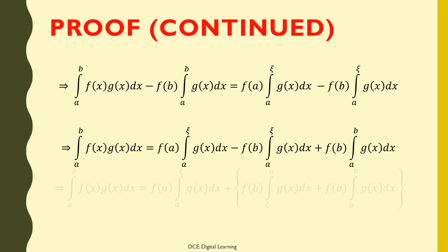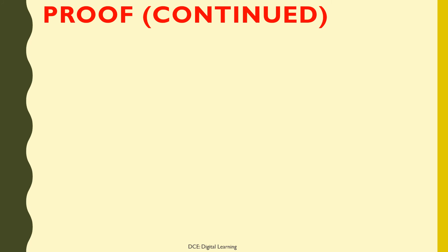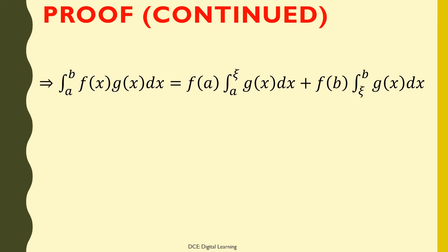On regrouping the terms, this implies the integral of f(x)·g(x) dx from a to b equals f(a) times the integral of g(x) dx from a to ξ, plus f(b) times the integral of g(x) dx from ξ to a, plus f(b) times the integral of g(x) dx from a to b. Which implies the integral of f(x)·g(x) dx from a to b equals f(a) times the integral of g(x) dx from a to ξ, plus f(b) times the integral of g(x) dx from ξ to b.